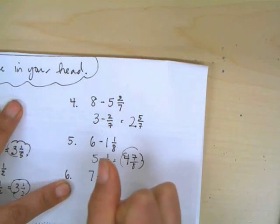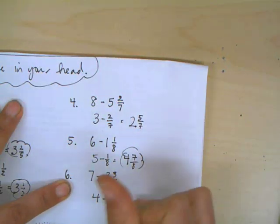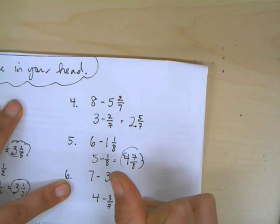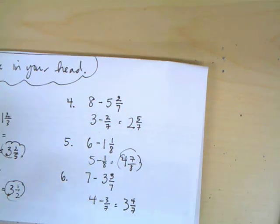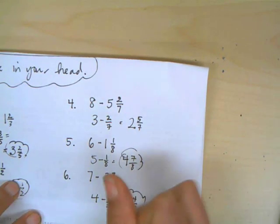Whole numbers 7 minus 3 is 4. Then subtract the fractional part. So I have less than 4. I have 3 and 4 sevenths.